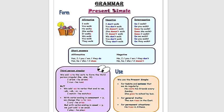What about the negative? We need to use 'not'. How can we use 'not' without a helping verb? In this case, we need to use 'do' or 'does': I don't walk, you don't walk, he doesn't walk, she doesn't walk, it doesn't walk, we don't walk, you don't walk, they don't walk.